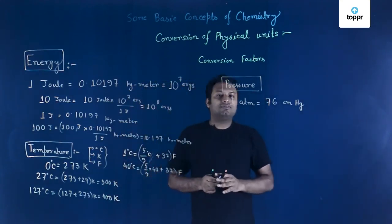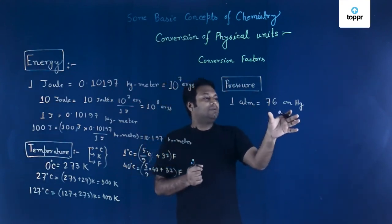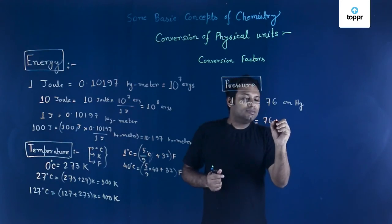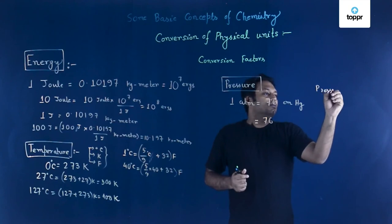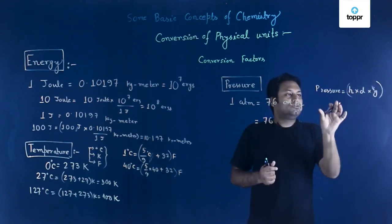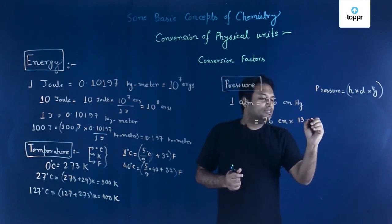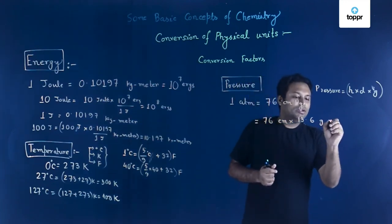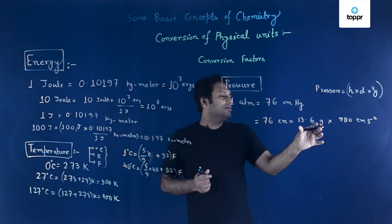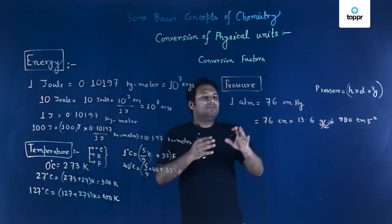Another important conversion factor is pressure: 1 atmosphere = 76 centimeters of Hg. Pressure = height × density × g. Using 76 cm, density of mercury = 13.6 g/cc, and g = 980 cm/s², we can calculate the atmospheric pressure in CGS units.